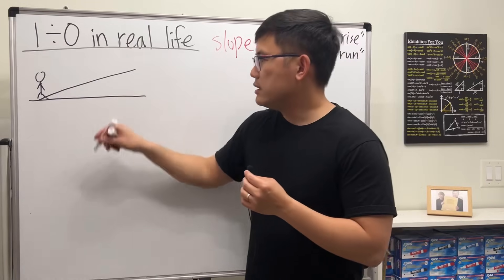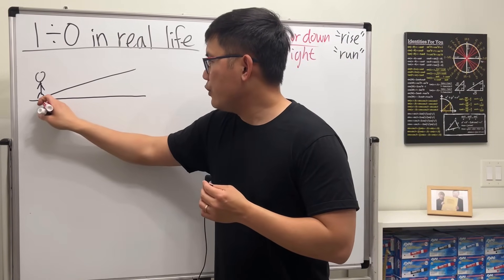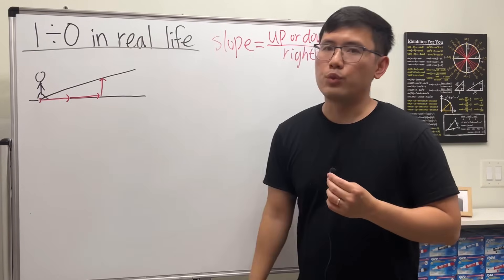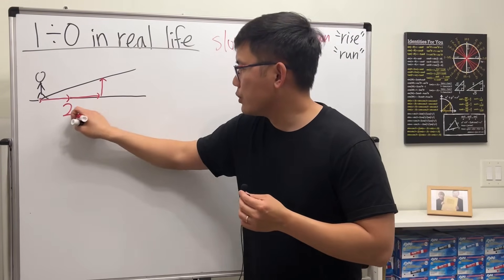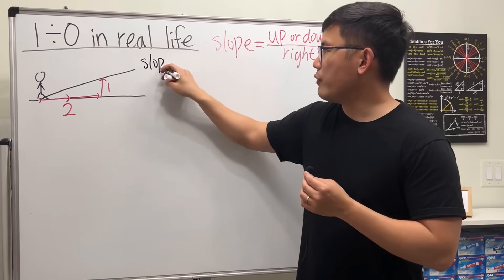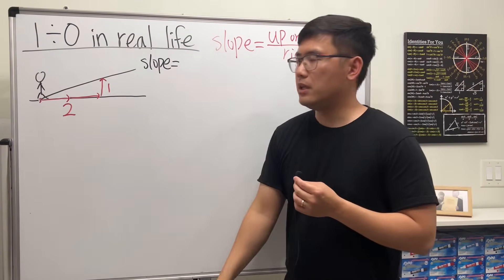Let's say in this situation, every time you move to the right two times, you go up one time. So the ratio is two and one. In that case, the slope of this line is defined to be one over two.